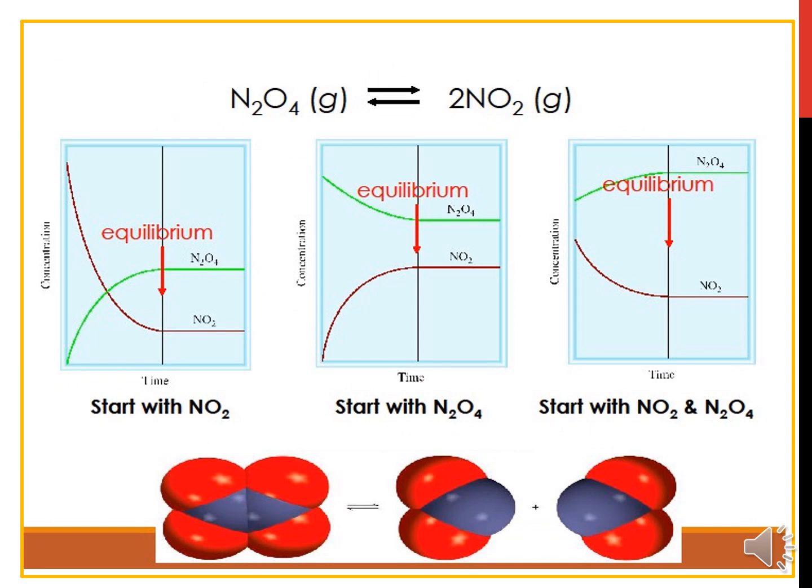So this is a dynamic equilibrium graph for the same reaction, the composition of N2O4 to NO2. There are three different graphs for three different situations where for the first one we start with NO2, for the second one we start with N2O4, and for the last one we start with NO2 and N2O4. What we want to know from all of these three graphs is when the equilibrium is achieved from the graph.